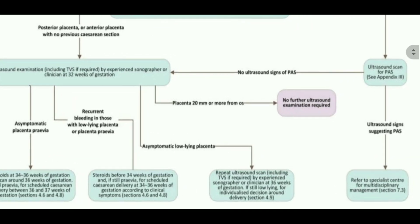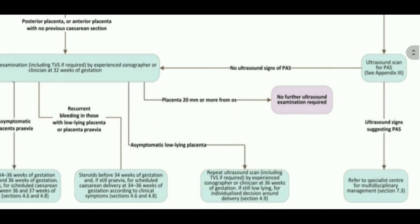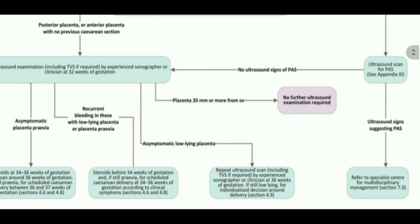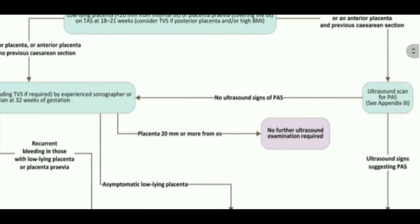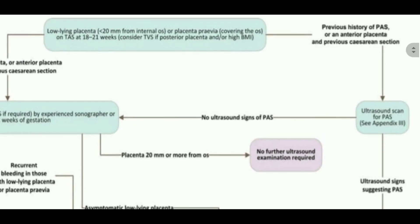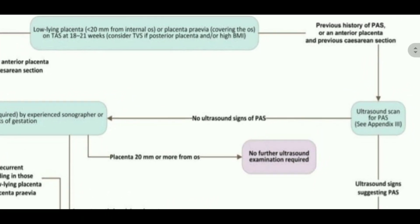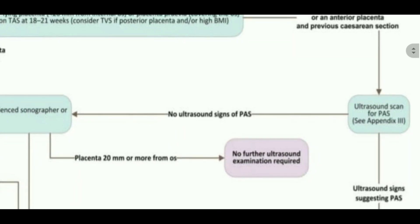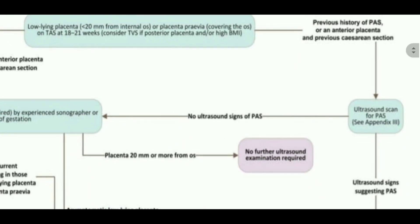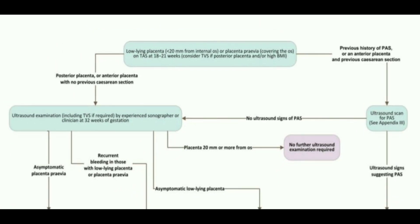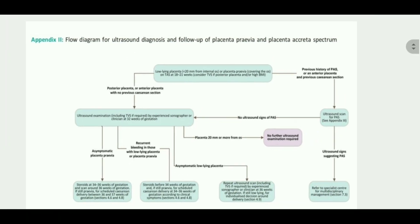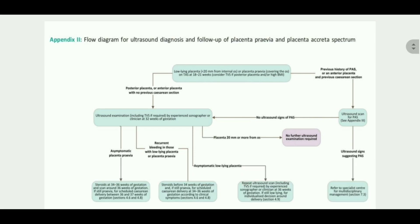One more important point: for patients in the right upper corner — those with previous C-section — if the ultrasound scan shows no signs of placenta accreta spectrum, then we proceed to a scan at 32 weeks of gestation, and the further flow chart is the same as explained for patients without a previous C-section. That concludes Appendix 2.